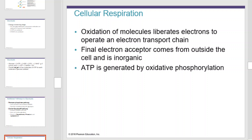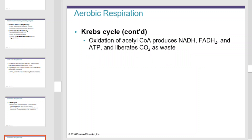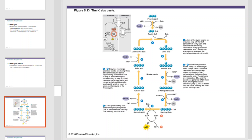Cellular respiration, also referred to as the citric acid cycle or Krebs cycle, is the oxidation of molecules that liberates electrons to operate an electron transport chain. The final electron acceptor comes from outside the cell and is organic. ATP is generated by oxidative phosphorylation. Pyruvic acid from glycolysis is oxidized and decarboxylated. The resulting two-carbon compound attaches to coenzyme A and forms acetyl-CoA and NADH. The oxidation of acetyl-CoA produces NADH, FADH, and ATP. It also liberates carbon dioxide as waste, which becomes the gas multicellular organisms exhale. This is an illustration of the Krebs cycle in totality.